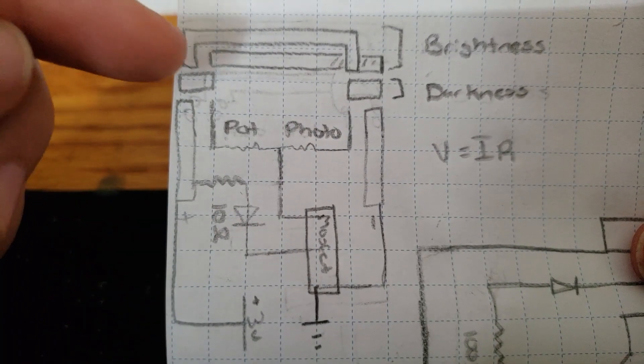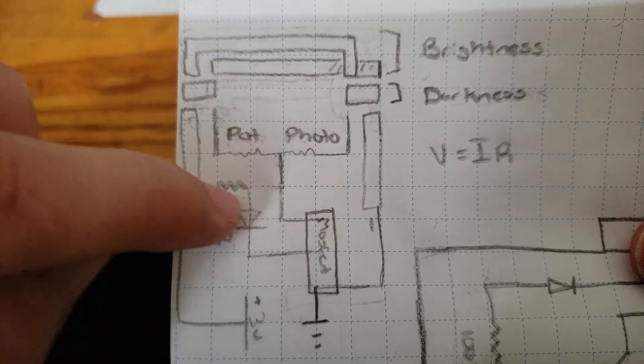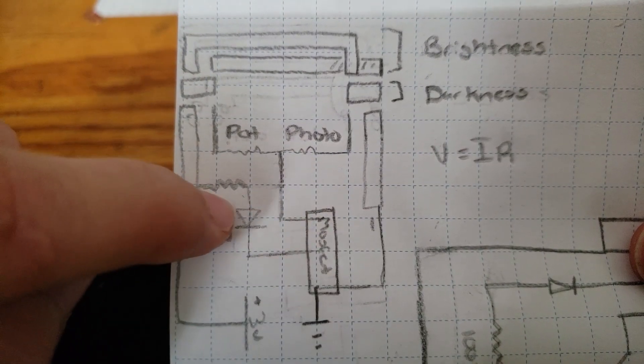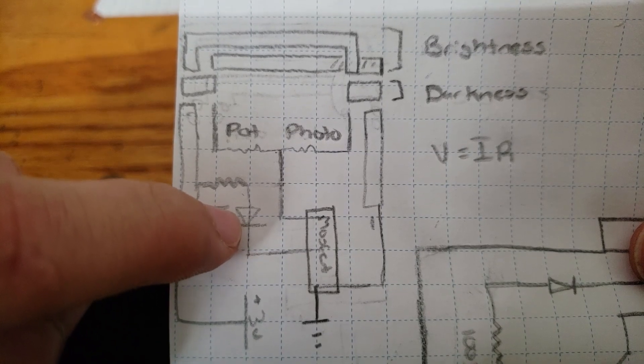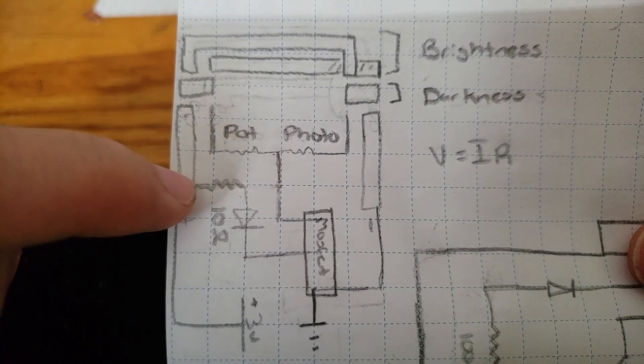This means that if it's bright, the MOSFET will not allow current to flow through. The LED will be turned off until it is dark.